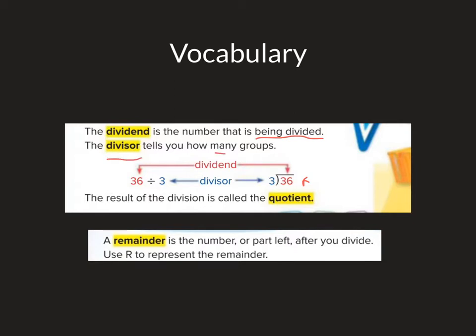The divisor tells you how many groups we're dividing it into. The result, or the answer to a division problem, is called the quotient. The remainder is the number or part left after you divide. You use R to represent the remainder. So after I've divided up my pieces into equal groups, if there are some left over, that's my remainder. We'll talk more about that on the next slide.